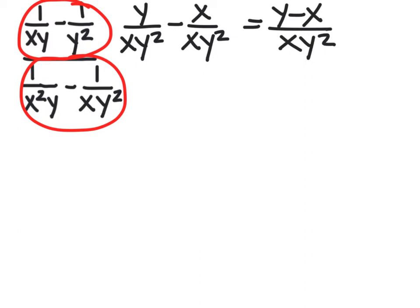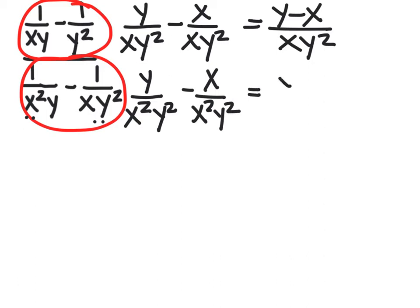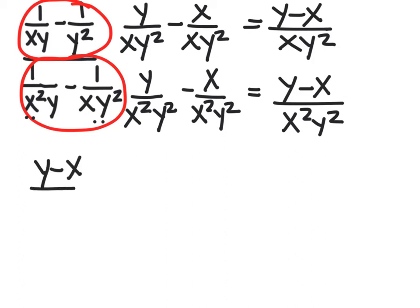For the denominator, we need x squared y squared. The first fraction gets multiplied by y over y to give y over x squared y squared, and the second gets multiplied by x over x to give x over x squared y squared. So the denominator simplifies to y minus x over x squared y squared. Note that x can't be 0, y can't be 0, and y minus x can't be 0. Now we flip and multiply: y minus x over xy squared times x squared y squared over y minus x.